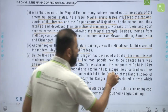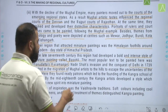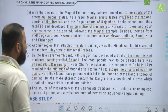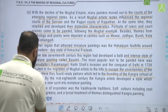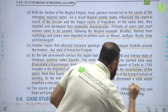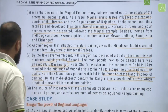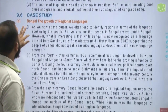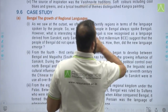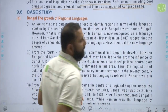Nadir Shah's invasion and conquest of Delhi in 1739 resulted in the migration of Mughal artists to the hills to escape the uncertainties of the plains. Here they found ready patrons, which led to the founding of the Kangra school of painting. By the mid-18th century, Kangra artists developed a style that breathed a new spirit into miniature painting, drawing inspiration from Vaishnavite traditions. Soft colours including cool blues and greens were used, and a lyrical treatment of themes distinguished Kangra paintings.